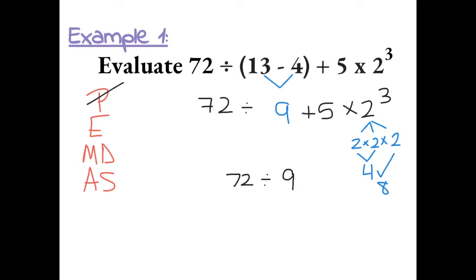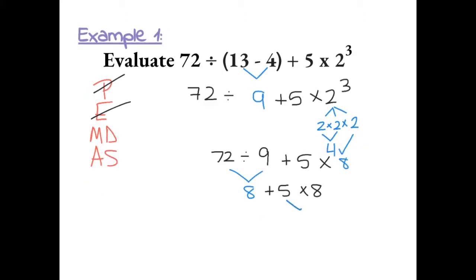We have 72 divided by 9 plus 5 times 8. Now we can do any multiplication or division, whichever comes first from left to right. First, 72 divided by 9 gives us 8. We're still not done with multiplication and division, so next we multiply 5 times 8, which gives us 40. Now that we've done all multiplication and division, we can add or subtract. This gives us 48.